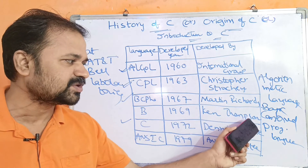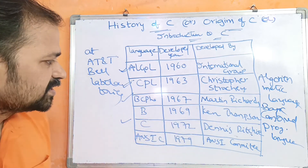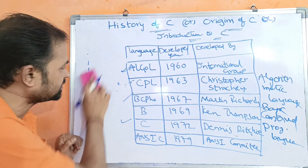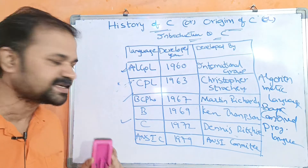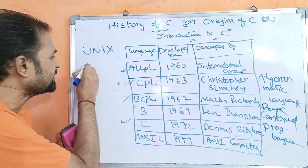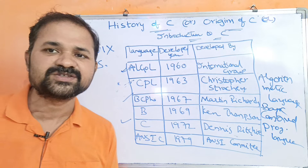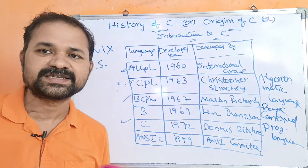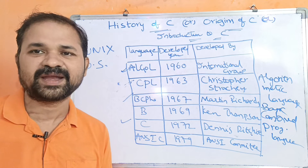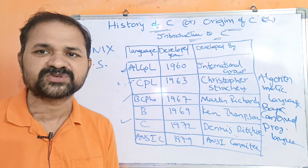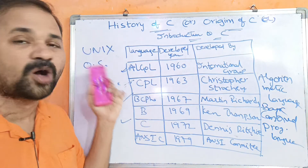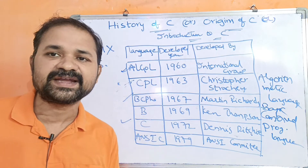B language was developed by Ken Thompson in 1969, in order to write the Unix operating system. B supports all the features of BCPL and has its own features. There are many operating systems: Windows, Unix, Macintosh. B was developed for the Unix operating system.